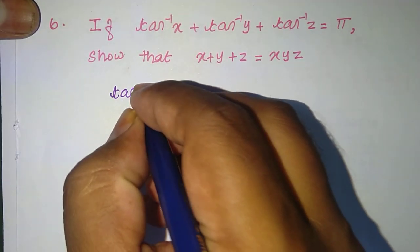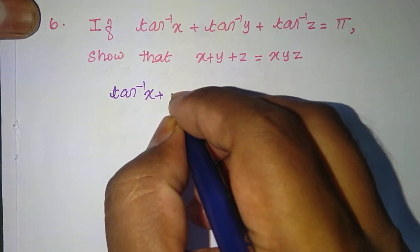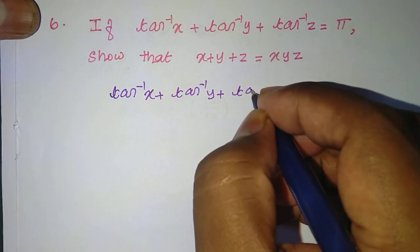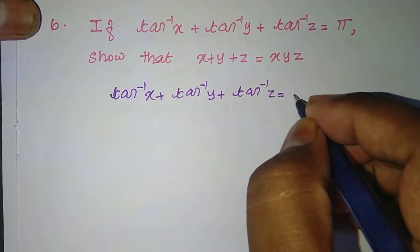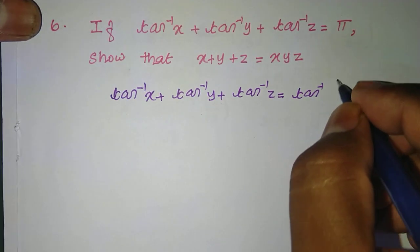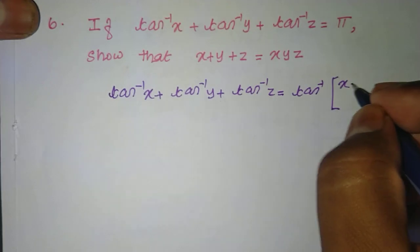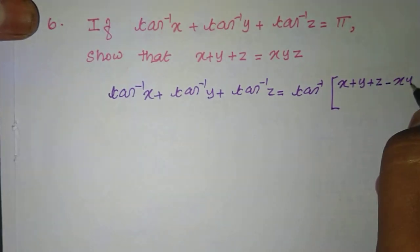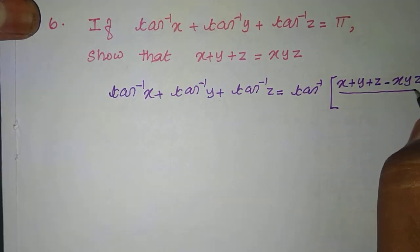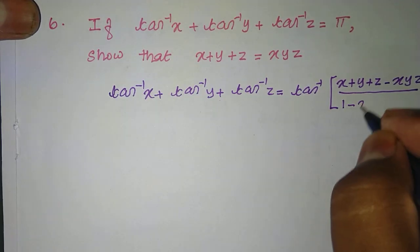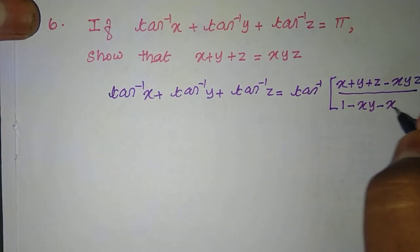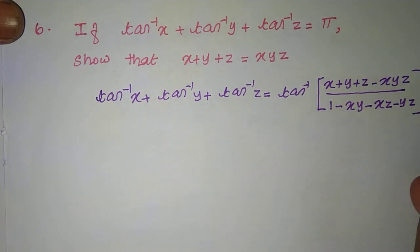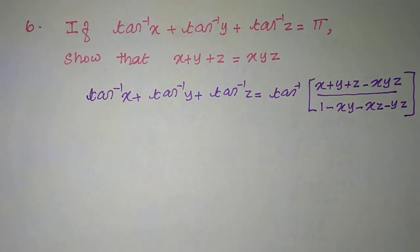This is the formula: tan inverse of x plus tan inverse of y plus tan inverse of z equals tan inverse of x plus y plus z minus xyz, all divided by 1 minus xy minus yz minus xz. This is the tan inverse of x plus y plus z formula.